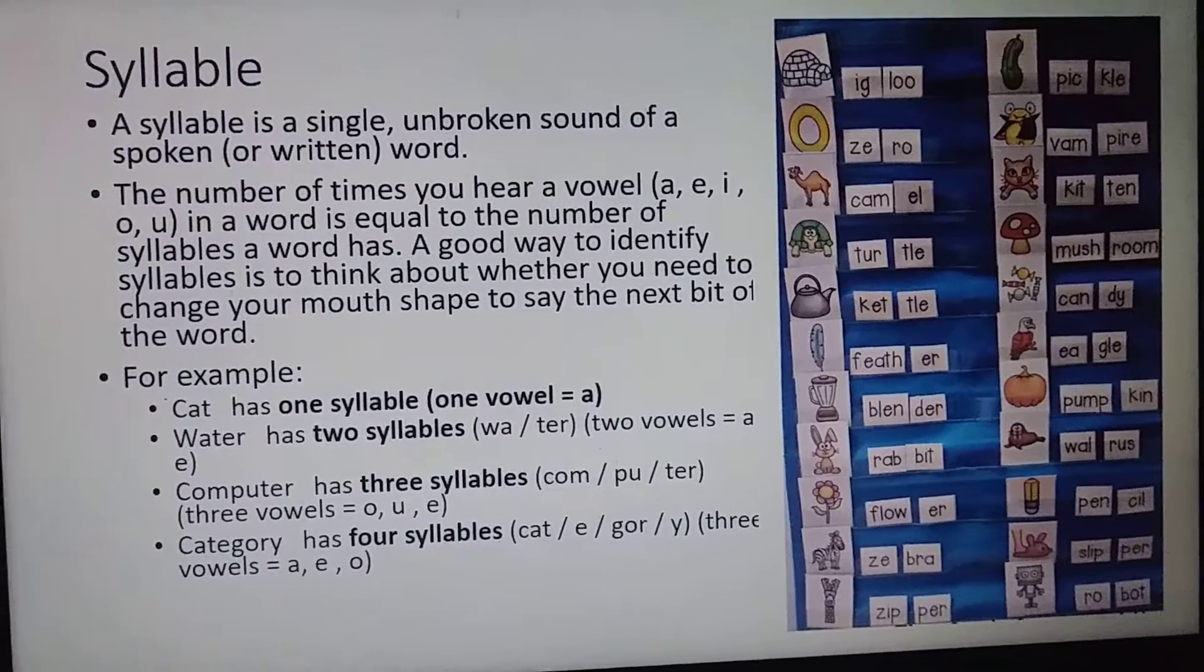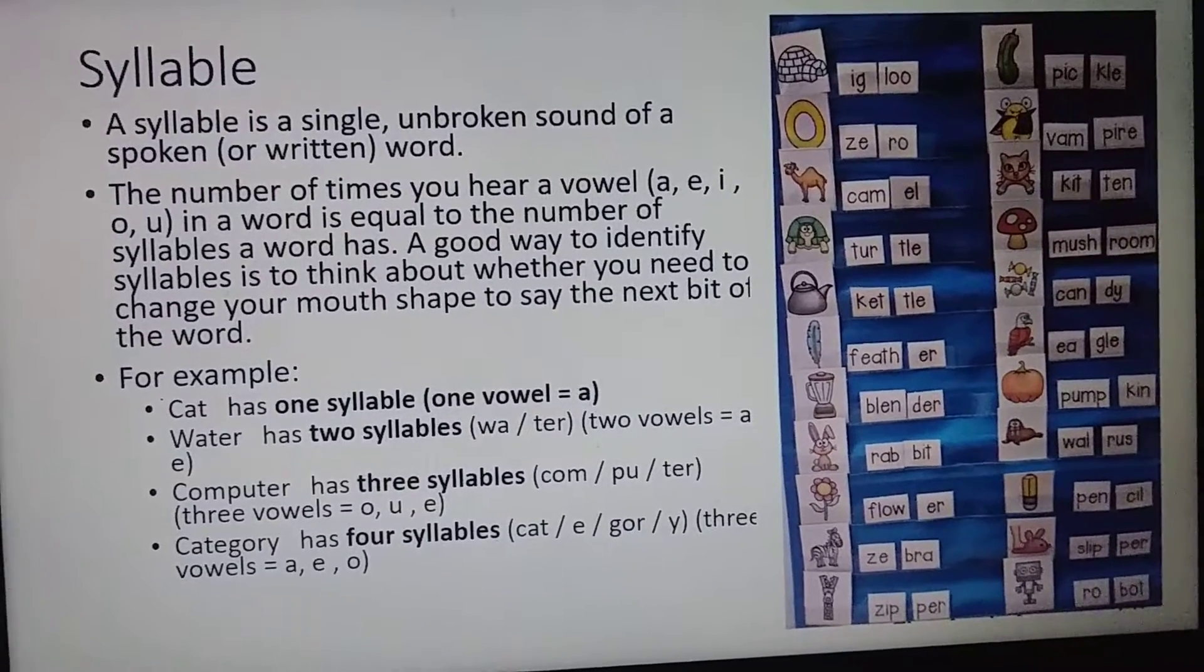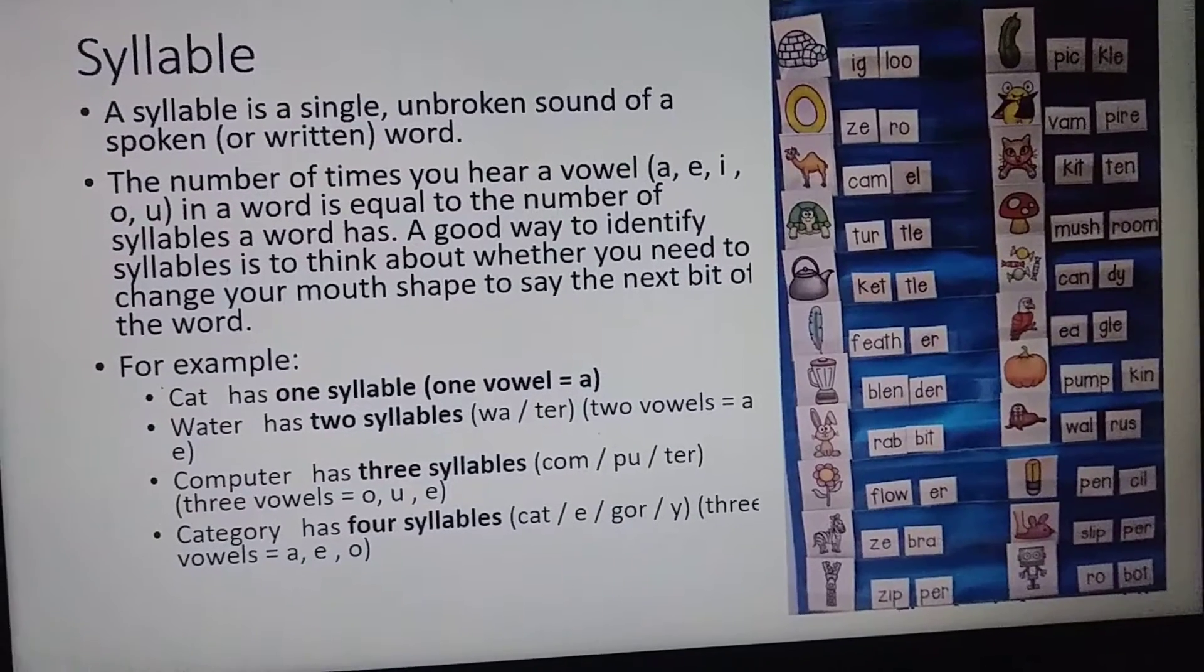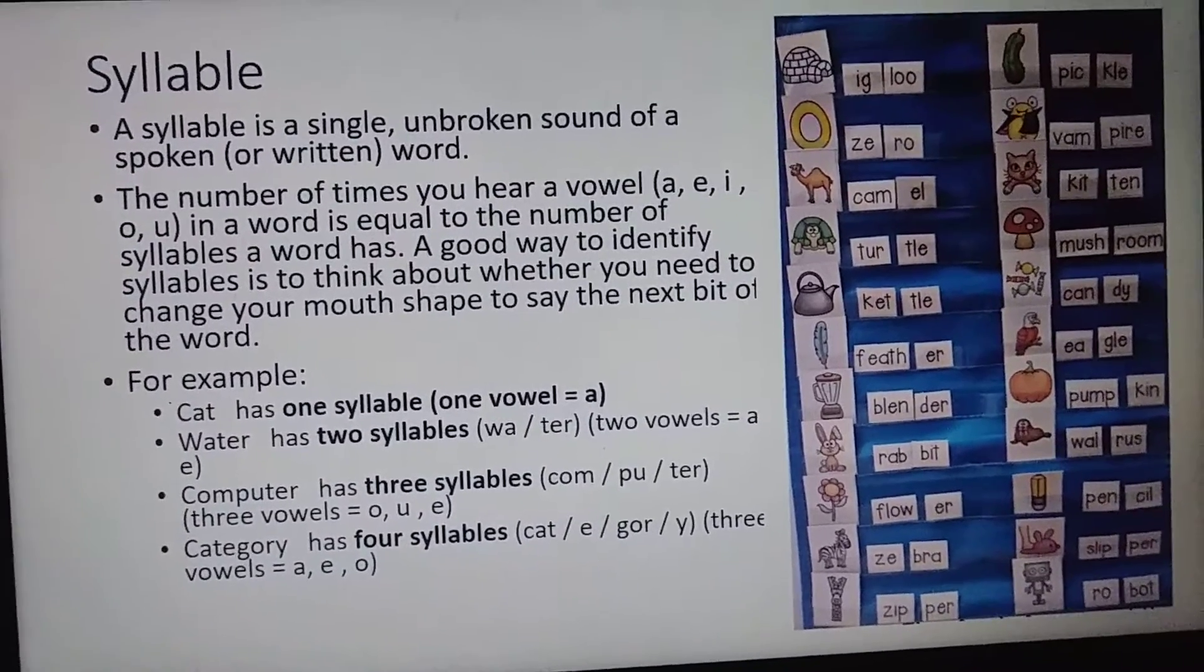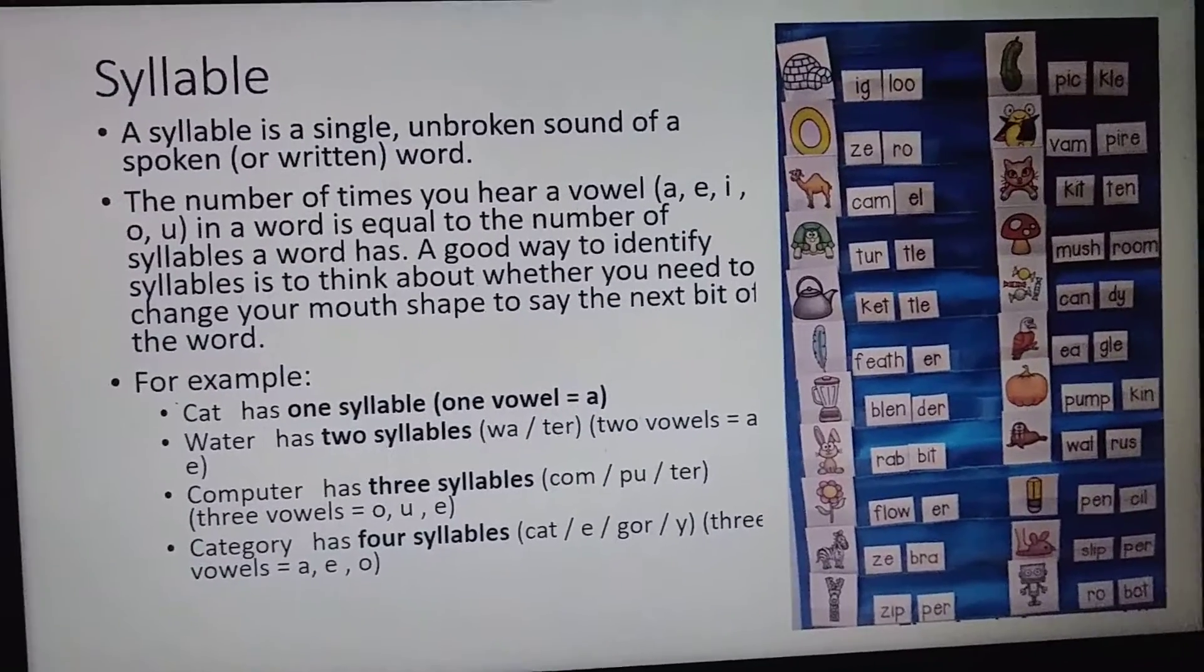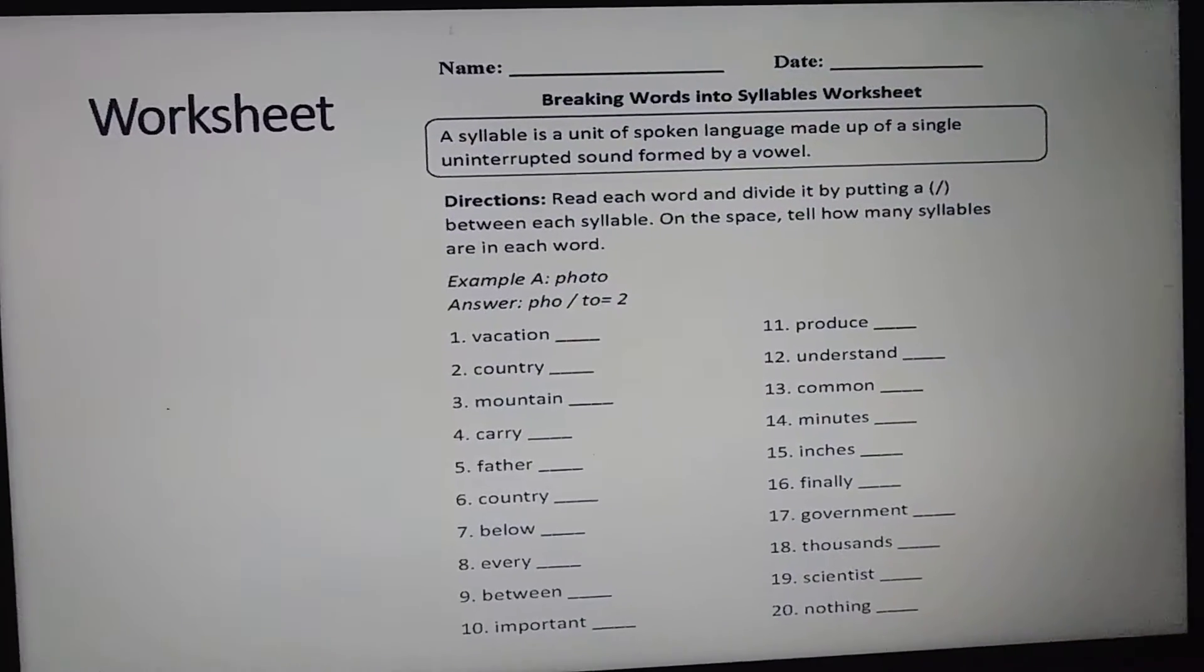For example, cat - the vowel 'a' is there, so it has only one syllable. The next one is water - there are two vowels in it, 'a' and 'e', so that means there are two syllables. Same is the case with the rest of these words.